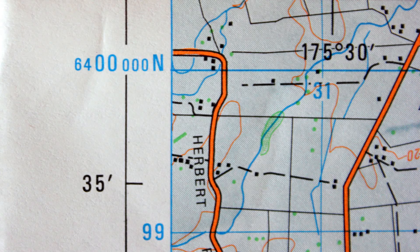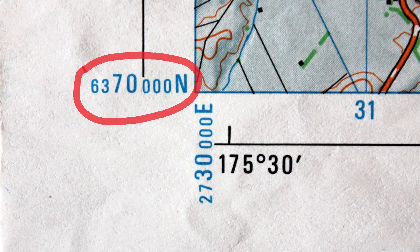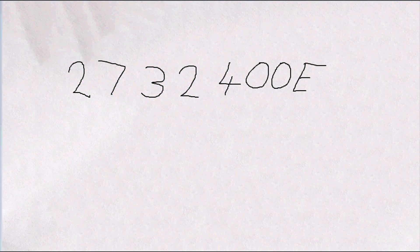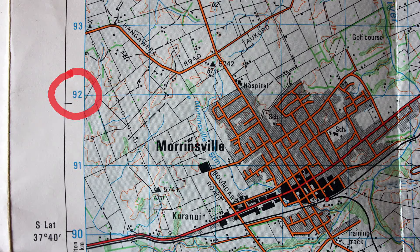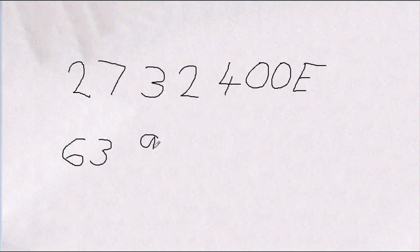To obtain the Northing you need to follow the same method up the map. There is a small blue reference number that ends with an N, also at the bottom left corner — this is the reference for the Northings. Again, write down the first two numbers; for the hospital the number will be 63. Then write down the two usual grid numbers written vertically up the side of the map — in this case the number is 92.